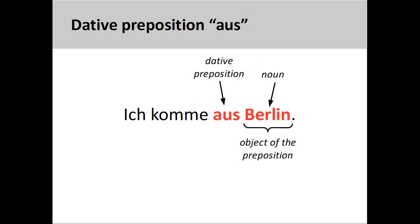'Aus' can also be used to describe where a person comes from, as in 'Ich komme aus Berlin' — I come from Berlin. As we have seen at the beginning of this presentation, 'Aus' can also be used to describe the process of emerging out of a building or a location, or taking something out of an object.